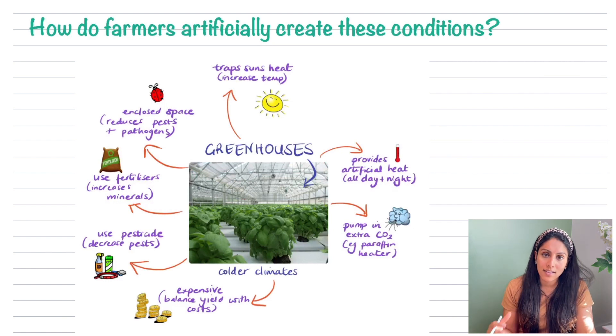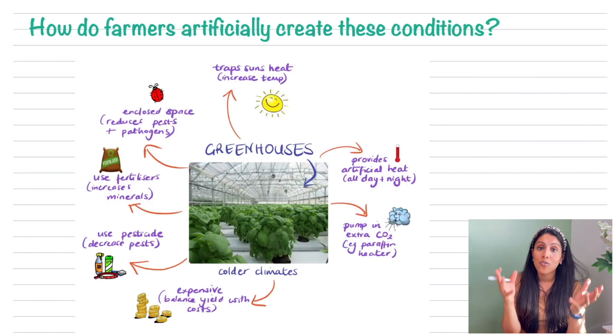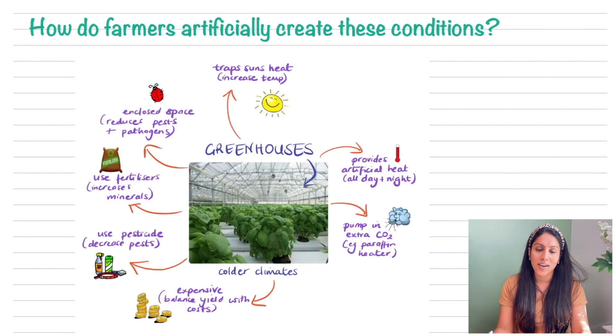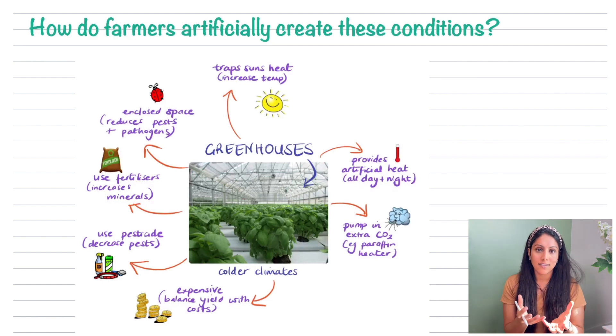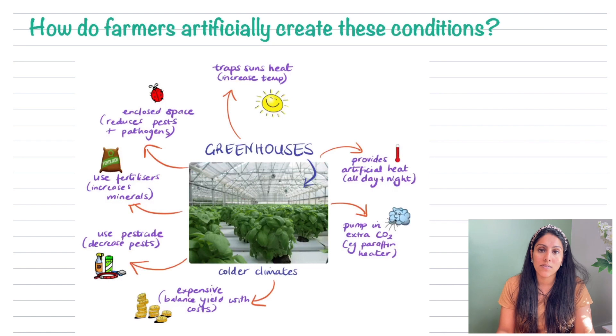Science applies to so many aspects of life, and the same goes for farmers. Farmers try to maximise their yield — the amount of crops they produce — because they're business people who want to make more money. So how do farmers artificially create optimal conditions? They use greenhouses, which allow them to control different variables.